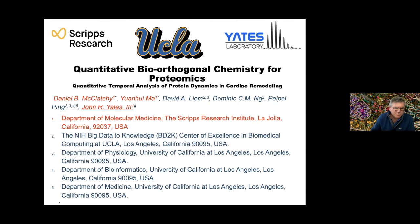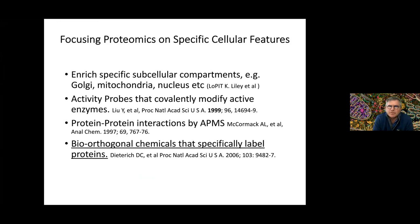There are a number of ways to focus on proteomics to look at specific cellular features — these are certainly not exhaustive references. You can enrich for specific sub-cellular compartments: Golgi, mitochondria, nucleus, and so forth. I really like the method that Catherine Lilly developed called LOPIT. You can also use activity probes that specifically modify active enzymes, developed by my colleague at Scripps, Benjamin Cravat. You can also do protein-protein interactions by affinity pull-down mass spectrometry. A fourth strategy uses bio-orthogonal chemicals that specifically label proteins, originally published by Dave Terrell and Aaron Schumann, who were at Caltech, back in 2006.